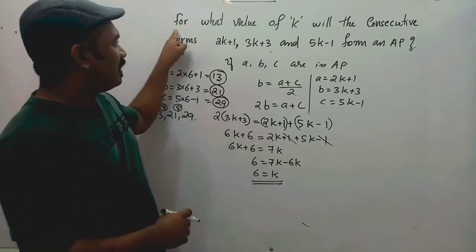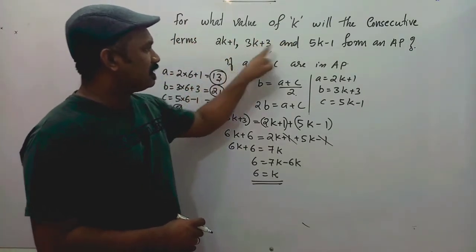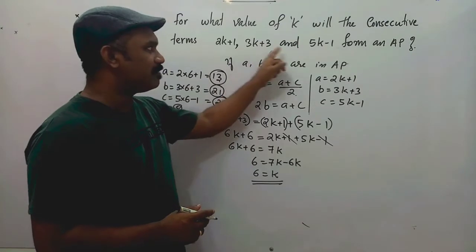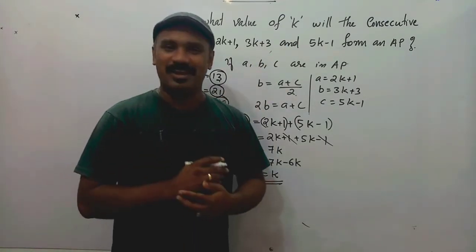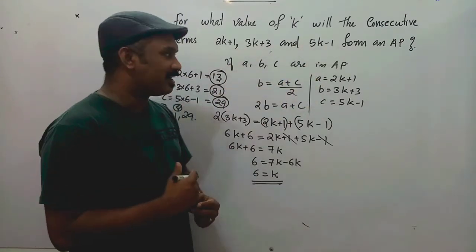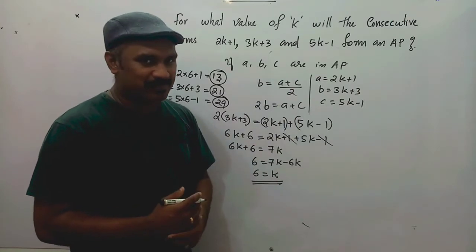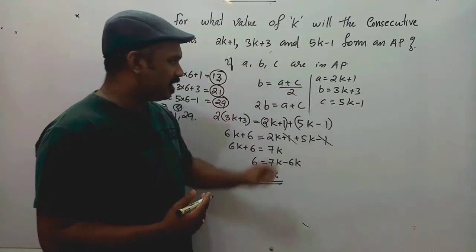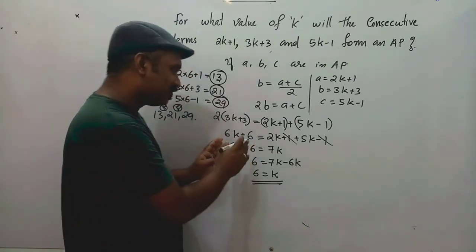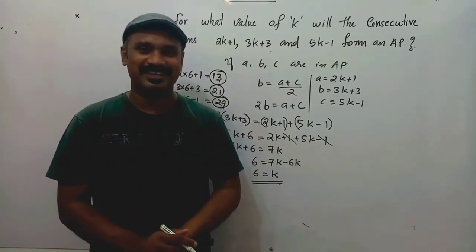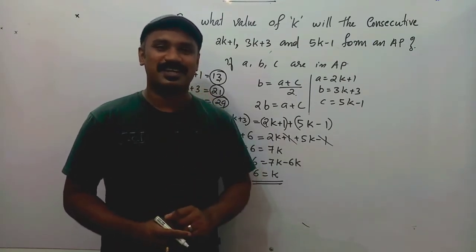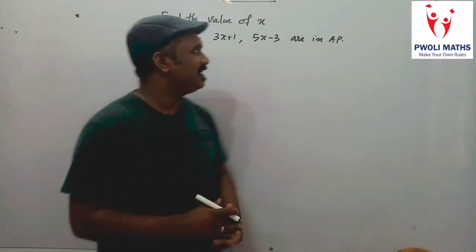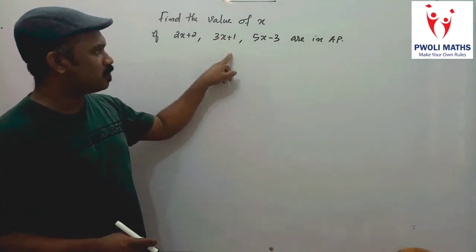So in this question, we had to find what k value makes the three terms consecutive terms of an AP. We applied the formula: B equals A plus C by 2, substituted the expressions, and solved for k. Now for practice, the first question is: find the value of x if 2x plus 2, 3x plus 1, and 5x minus 3 are in AP.